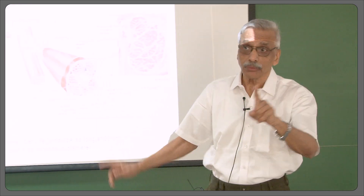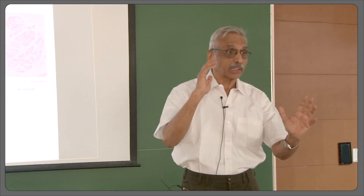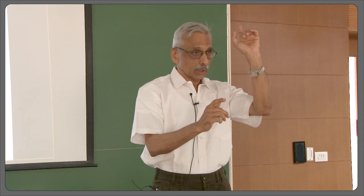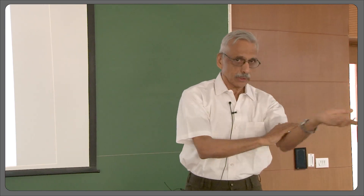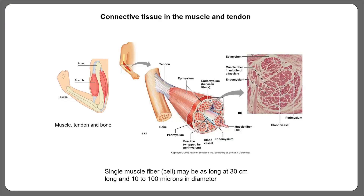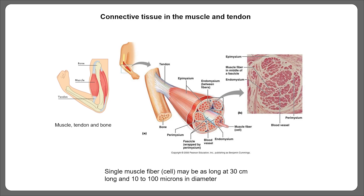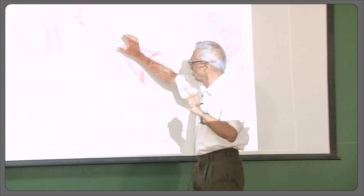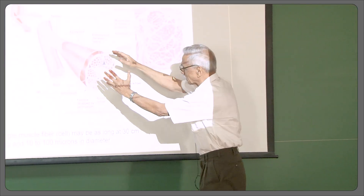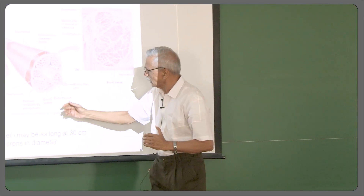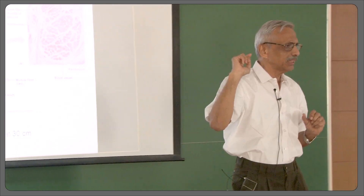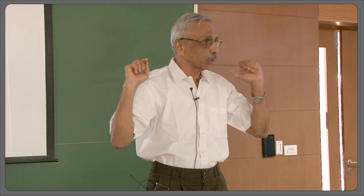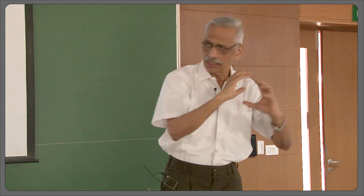Voluntary muscles are the striated muscles. The skeletal muscle has to be anchored on one bone, with the other end on another bone, so that when it contracts you can have functioning of a joint. Here you can see the muscles of your upper arm — the extensor and the flexor. If I take a transverse section, I can see several bundles; each bundle is called a fascicle.